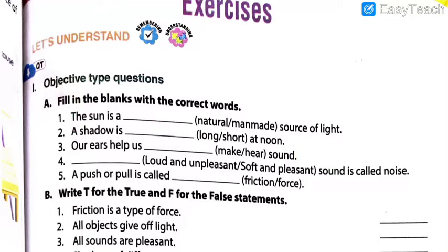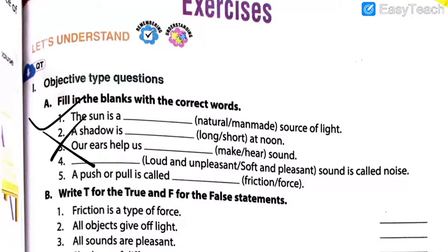The sun is a dash source of light — is it made by anyone? Look at the sun. Is it made by any scientist or anyone else? No. So it is not man-made, it is natural. Natural is the answer. Number two: A shadow is dash at noon — is shadow long or short at noon? Shadow is short at noon and long in the morning, so short is the answer. If you have written the same answer, put a tick mark so you'll know how many are wrong and how many are right.